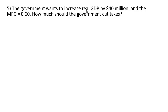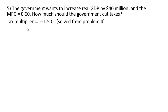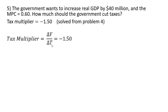Example 5. The government wants to increase real GDP by $40 million and the MPC equals 0.6. How much should the government cut taxes? The first thing we need is the tax multiplier. As we saw in Example 4, given the MPC of 0.6, the tax multiplier is minus 1.5. Using our tax multiplier equation — change in real GDP divided by the change in taxes equals minus 1.5 — we plug in what we know. We want to increase real GDP by $40 million, so change in Y is 40.